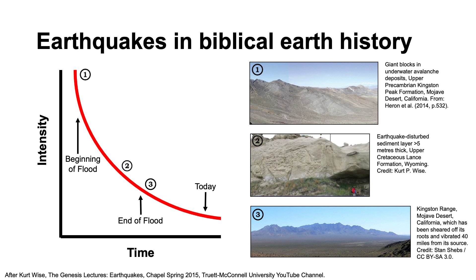Kurt Wise has also been mapping thick seismite layers in the flood-deposited rocks of the Upper Cretaceous Lance formation of Wyoming. These sediment layers have been contorted by liquefaction induced by earthquakes and they're huge compared to their modern counterparts. Given that modern earthquakes registering over nine on the magnitude scale generate only a few inches of contorted bedding, what kind of earthquakes must have generated the five-metre-thick seismites evident in the Lance formation? Kurt Wise has also pointed to evidence of earthquakes along the San Andreas Fault that were apparently of sufficient magnitude to shear entire mountain ranges off their roots and bounce them across the landscape for tens of miles.